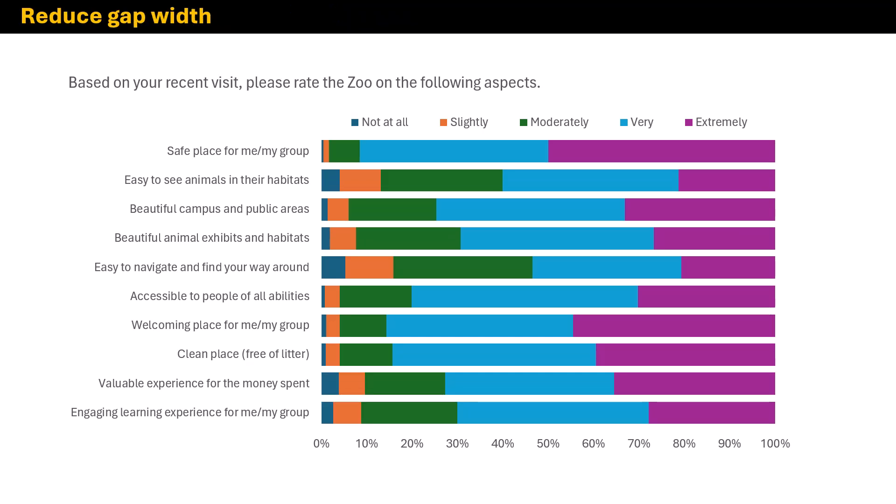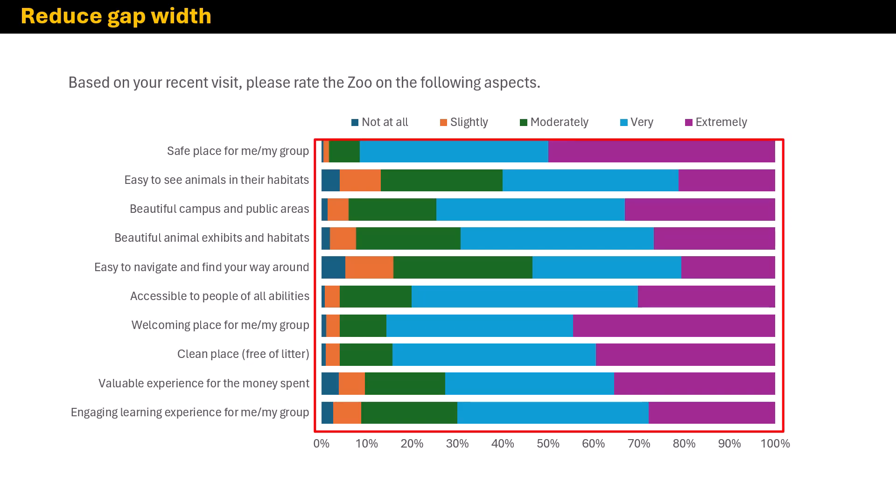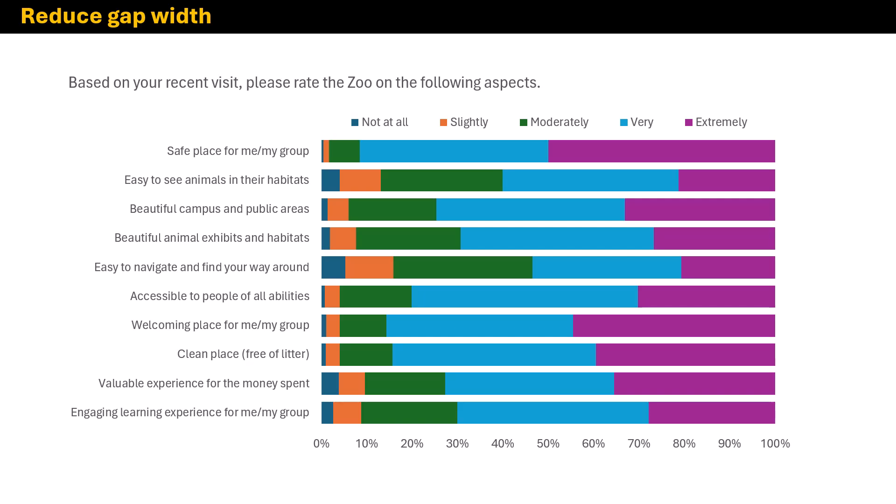The next thing we're going to do is reduce the gap width in the bars. The gap width is the white space between bars, and Excel always defaults this to around 150 or 180%, depending on the chart type. I want to make those bars chunky so they fill the area of the slide, so I'm going to reduce the gap width to 30%.